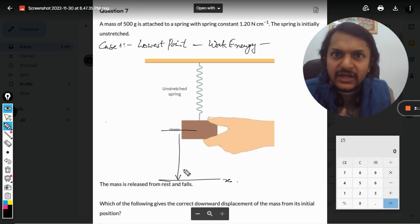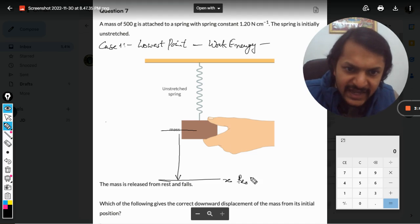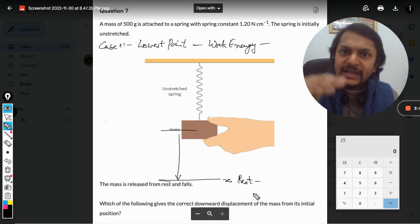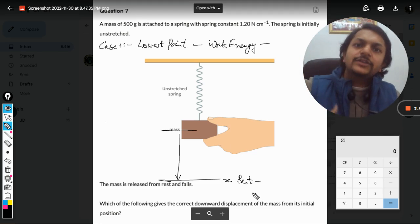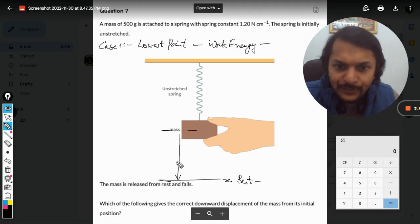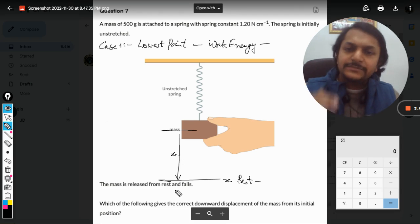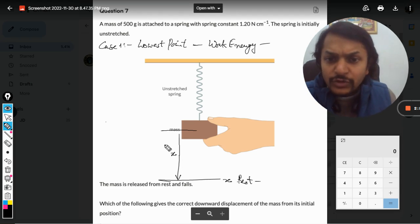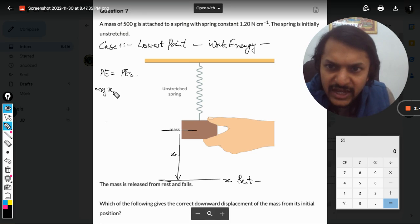Because this mass is at rest - it comes to rest momentarily and then goes back up again. So I can say that the loss in potential energy is equal to the gain in elastic potential energy for the spring. So mg x equals half k x squared. Mass is half, gravity is 10, this is again half, and this is k.